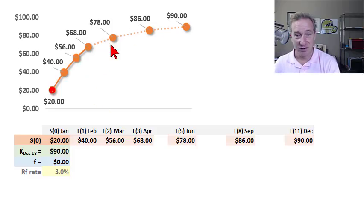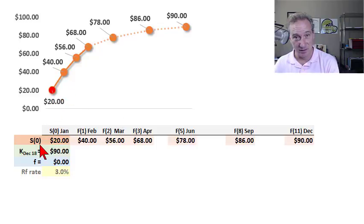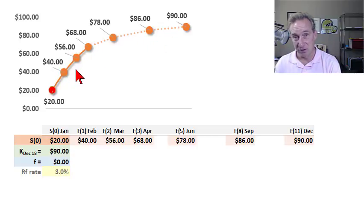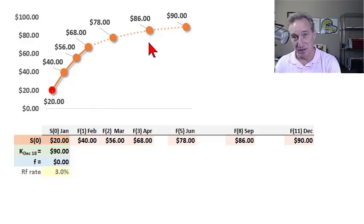Here I've imagined a steeply upward sloping forward curve. This is a contango where we are in January and the spot price is $20 — that's the red dot, denoted as S sub zero. The forward curve is simply the set or series of observed or trading futures prices on the forward delivery months. Mine here is steeply upward sloping, and the upward slope indicates contango.